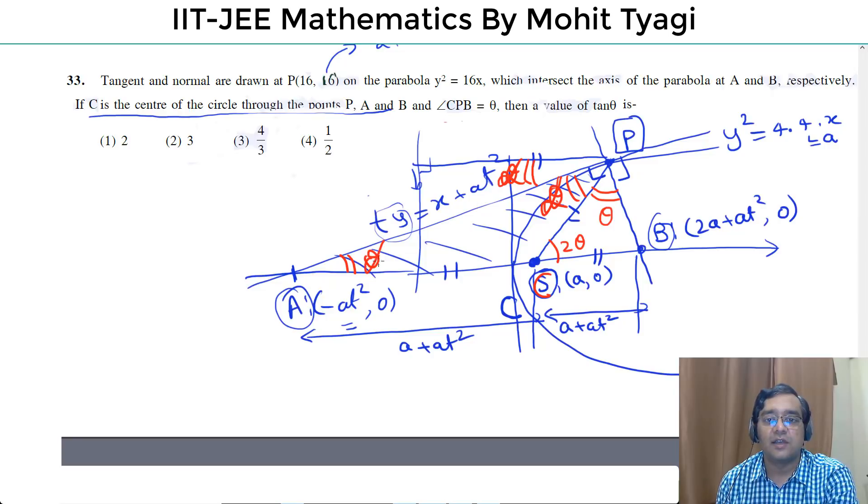Let's change it. This angle is alpha. Okay? This line is the slope. tan alpha. 1 upon t.